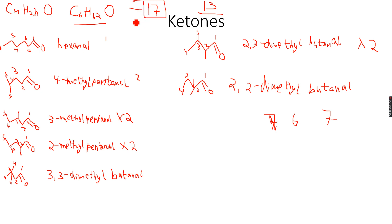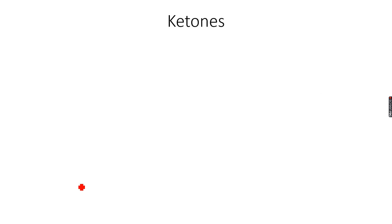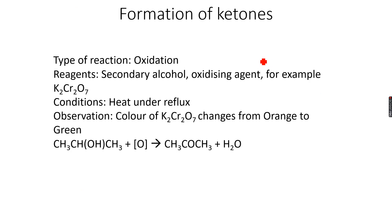Because we have to consider all the ketones and all the aldehydes with this general formula. So with this we end the isomerism of carbonyl compounds. Now we know how to use functional isomerism in this case, so let's move further with the chemistry of ketones.